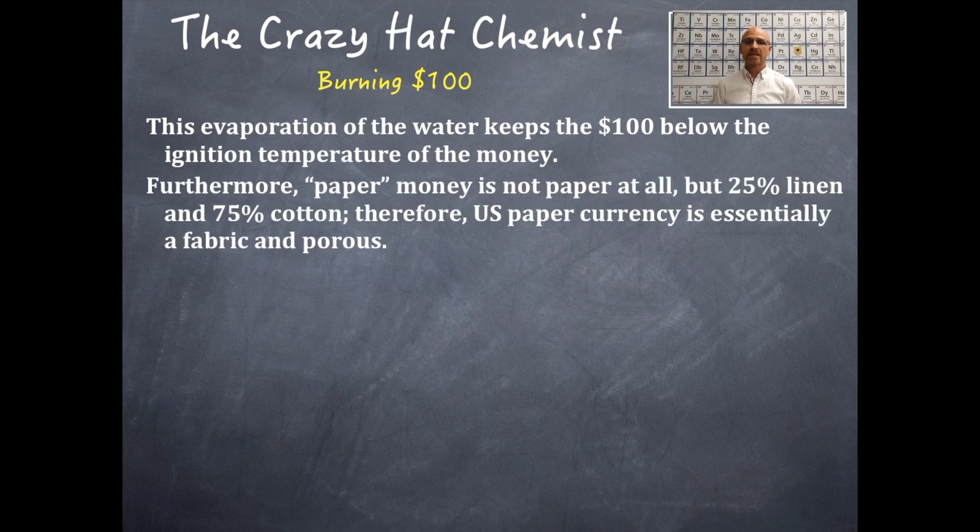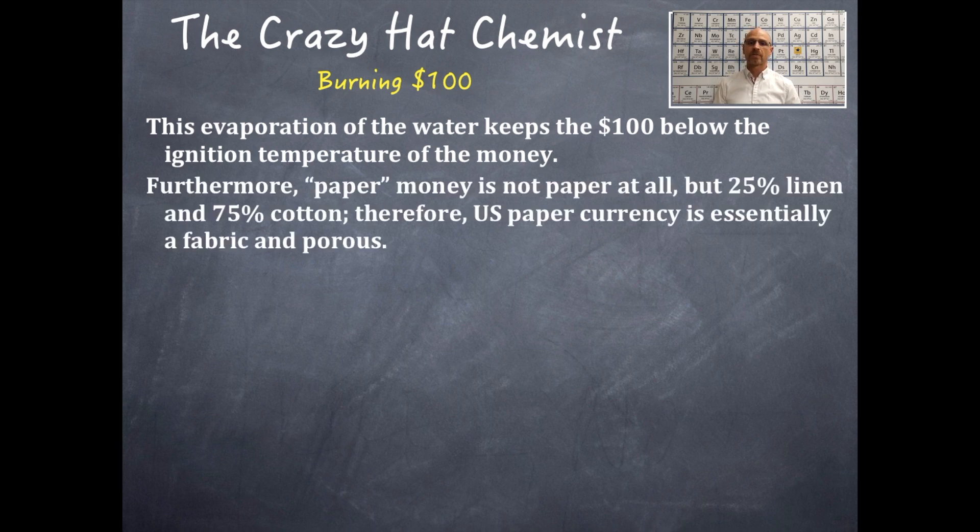Now, U.S. currency is very special. Furthermore, paper money is not paper at all. But it is 25% linen and 75% cotton. Therefore, U.S. paper currency is essentially a fabric, and therefore porous. And that's why it's essential on this one. And that's why my $100 bills were wet at the end of the combustion reaction.